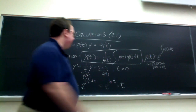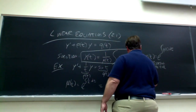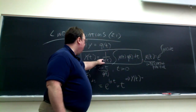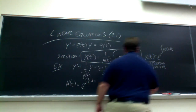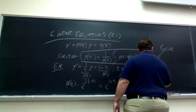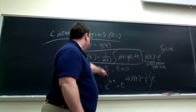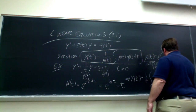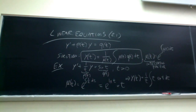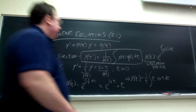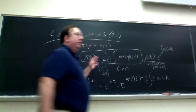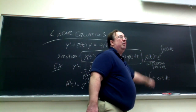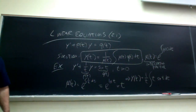So we have our integrating factor. Therefore, we can just plug these in. We have 1 over T times the integral of T times Q of T, which is sine T. Now, here's where I bring back some calculus — you still have to evaluate an integral. How would you go about that? Integration by parts.